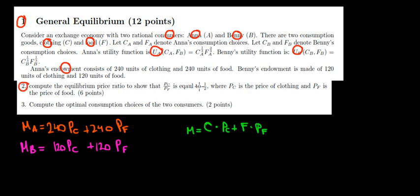In question 2, we want to compute the equilibrium price ratio and show that it is equal to 1 over 2. Before we go further, let's recall some things — because if it's about consumption, we must remember things about budget constraints, utility, maximization, and so on. First of all, let's recall that a budget constraint is the limit of money that we can spend.